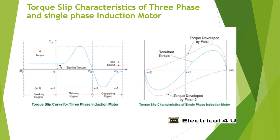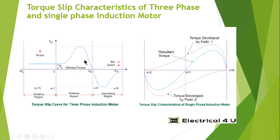The torque-slip characteristics have the following variables: torque and current on the y-axis and slip speed on the x-axis, for both single-phase and three-phase induction motors. There is also a torque-current curve. Some important parameters associated with the curve include the starting point or locked-rotor torque and the breakdown torque.